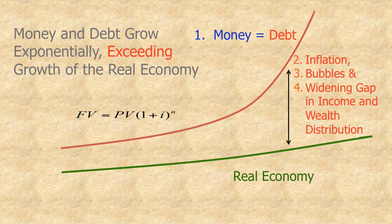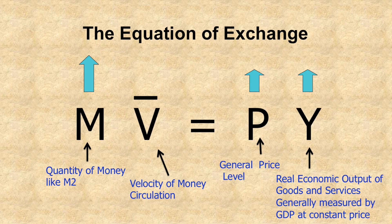We can explain that using the equation of exchange. The equation of exchange says MV equals PY. M is the quantity of money supply in the economy, generally we take M1 and M2. V is the velocity of money circulation. P is the general price level, and Y is the real economic output of goods and services, generally measured by GDP at constant price.